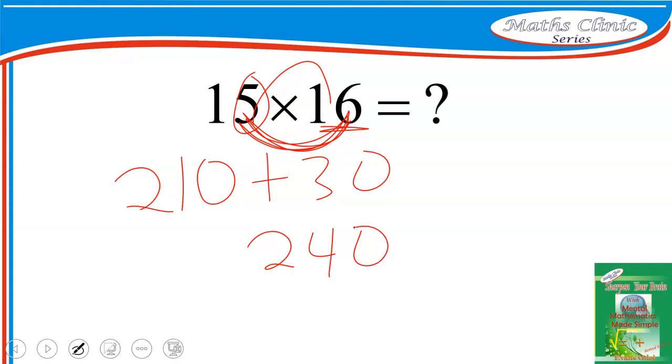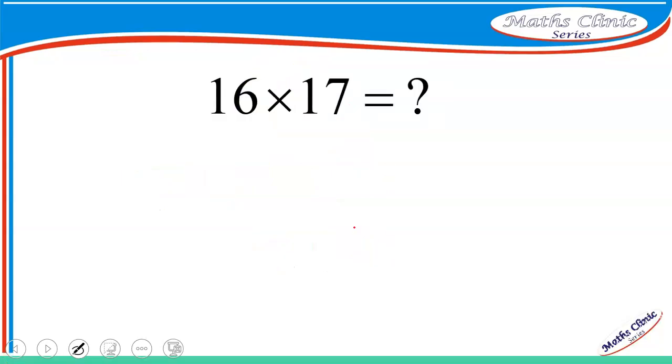Let's try another one. Let's say I have 16 times 17. Add the 6 to the 17 and that will give you 23. Call it 230 mentally. Then multiply 6 times 7, and 6 times 7 is 42.